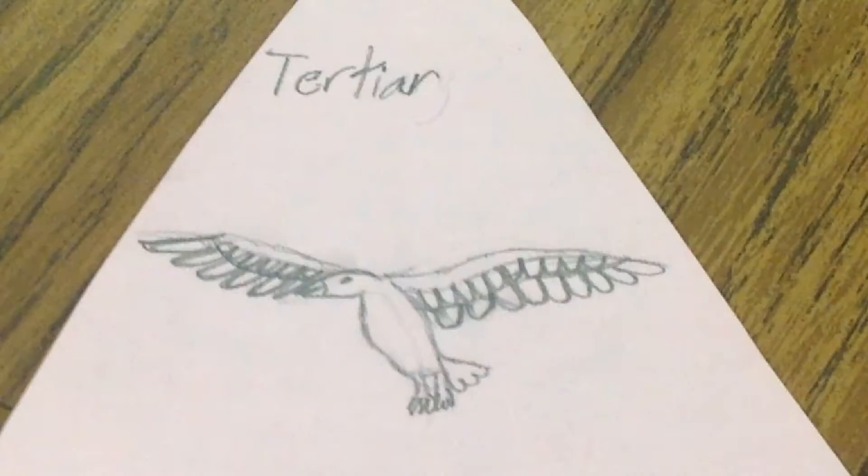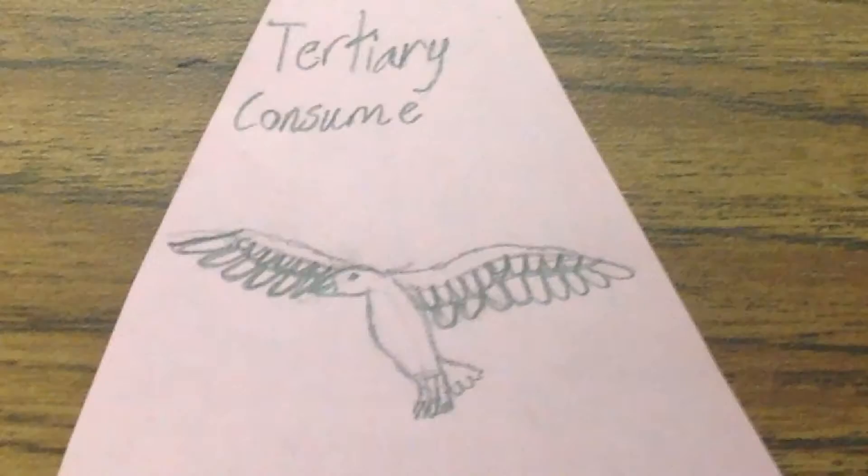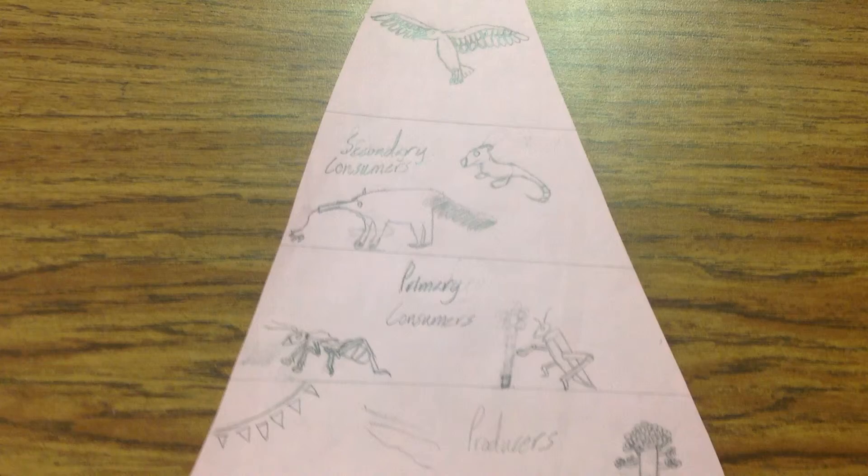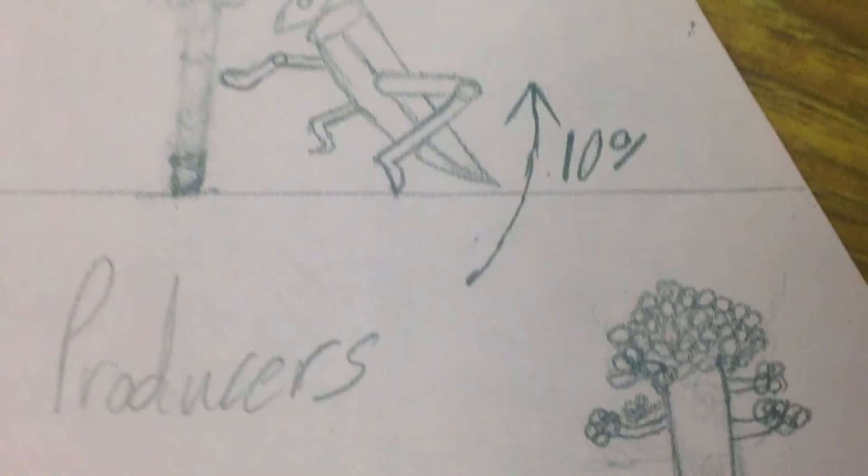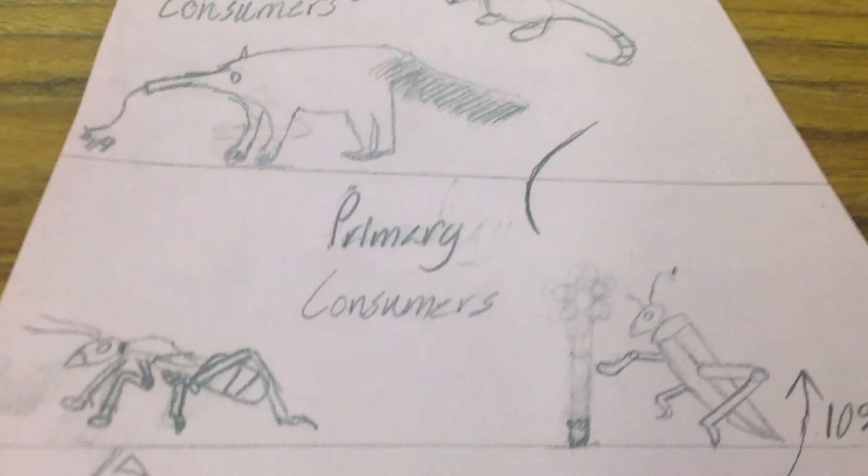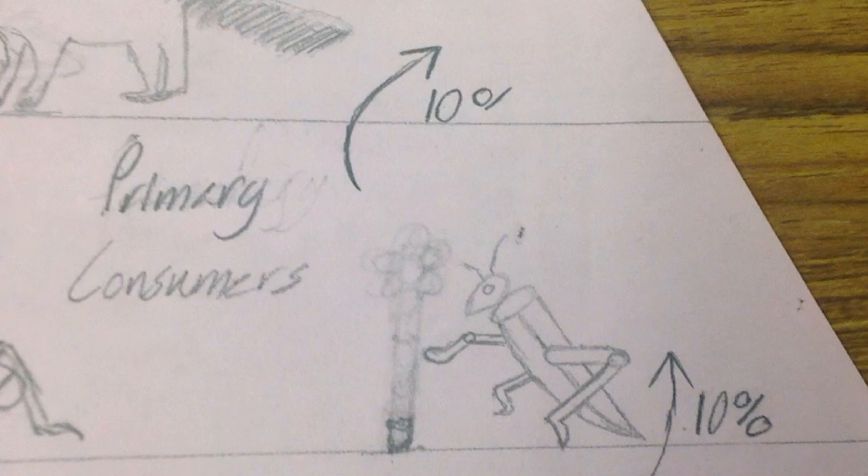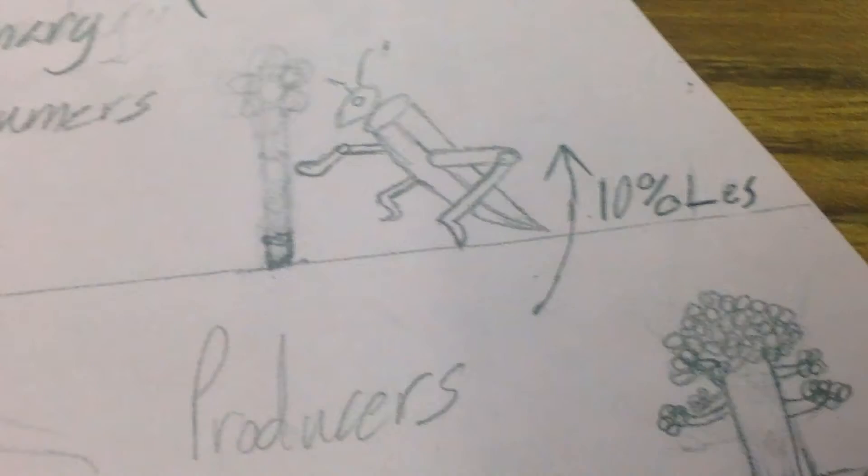After that are tertiary consumers, like hogs, that eat the mice. And from each level to the other is 10% less energy. Like, let's say if a cricket eats grass or an ant eats grass, 10% less of that energy goes to the next level.